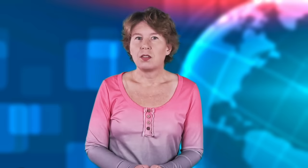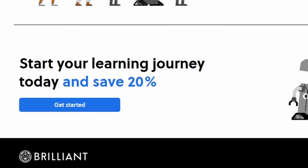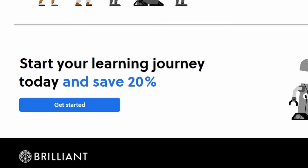If you want to try it out for free, use our link brilliant.org/sabine. First 30 days are free, and the first 200 of you to use this link will get 20% off the annual premium subscription. Thanks for watching. See you tomorrow.